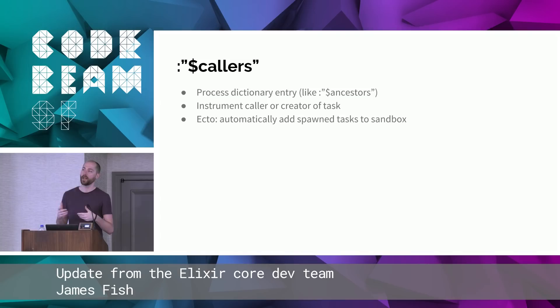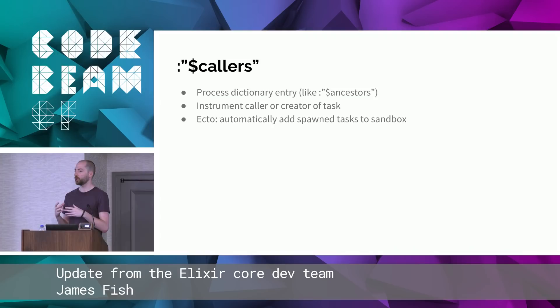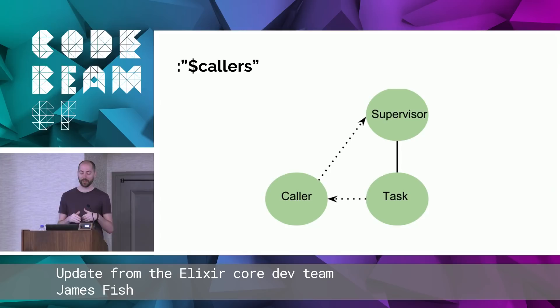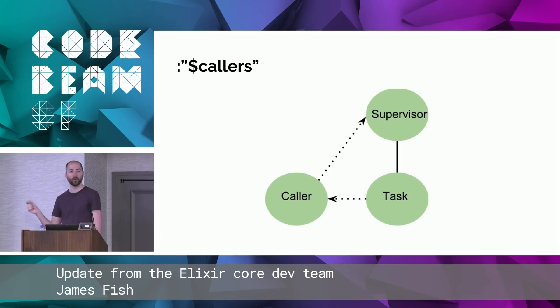One use case we had for this was the Ecto SQL sandbox, where we isolate different tests inside a transaction. If you start a task, you want that task to use the same sandbox. With this feature, we can now do it automatically. Previously you had to pass options around, and sometimes you would forget and the sandbox may not do what you thought. The caller is the process that sends a message to the supervisor saying 'start this task.' The task will get the caller in its process dictionary and it will be displayed in error messages. If you have a task start another task, you have the full chain of callers, so even if you have a task starting a task starting a task, they will all use the same sandbox.